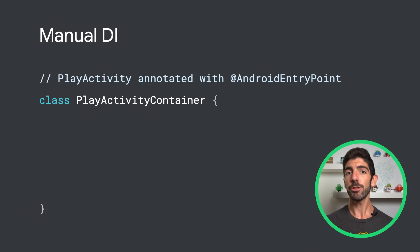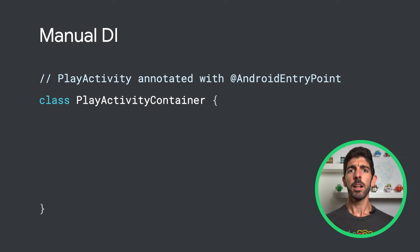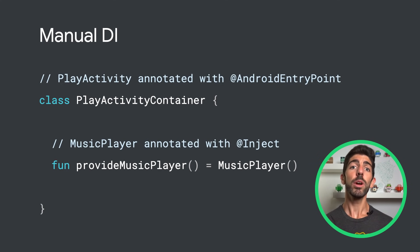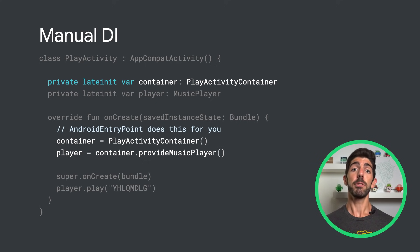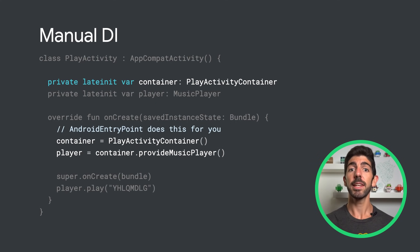This was a very simple and naive example. But if you had to do what we've done so far manually, how would you do that? When doing DI manually, you can have dependency container classes that are responsible for providing types and managing the lifecycle of the instances they provide. Oversimplifying a bit, that's what Hilt does under the hood. When you annotate the activity with @AndroidEntryPoint, a dependency container is automatically created, managed, and associated with PlayActivity. By annotating MusicPlayer with @Inject, we are basically telling the container how to provide instances of type MusicPlayer. In the activity, we would need to create an instance of the container and populate the dependencies of the activity using it — and that's also done by Hilt when annotating the activity with @AndroidEntryPoint.